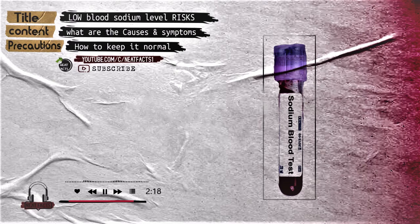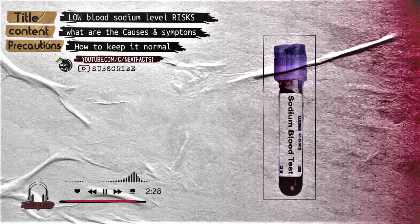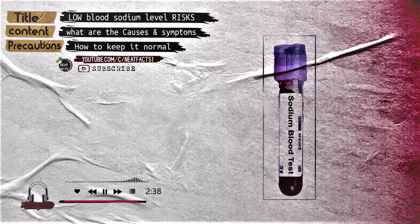Keeping your water and electrolyte levels in balance can help prevent low blood sodium. If you're an athlete, it's important to drink the right amount of water during exercise. You should also consider drinking rehydration beverages like Gatorade or Powerade. These drinks contain electrolytes and help replenish sodium lost through sweating. They are also helpful if you lose a lot of fluids through vomiting or diarrhea.